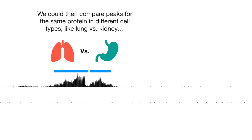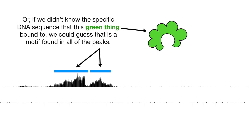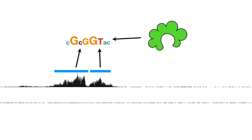We could then compare peaks for the same protein in different cell types, like lung versus kidney. Or, if we didn't know the specific DNA sequence that this green thing bound to, we could guess that it is a motif found in all of the peaks. Here's a motif found within the peaks that indicate where the green thing bound. The large letters are more frequently associated with the green thing than the little letters.